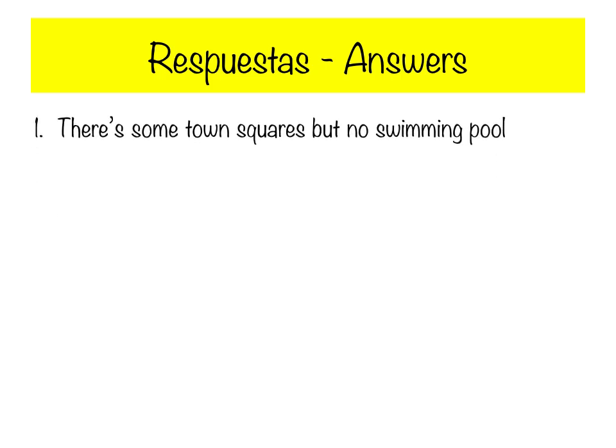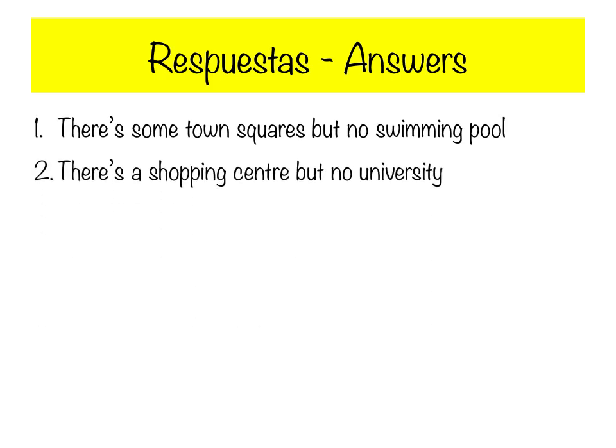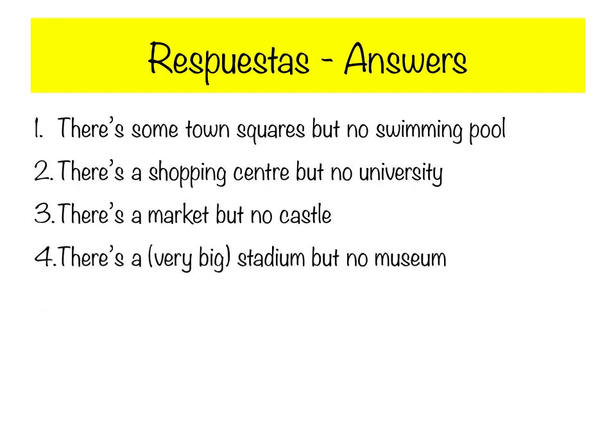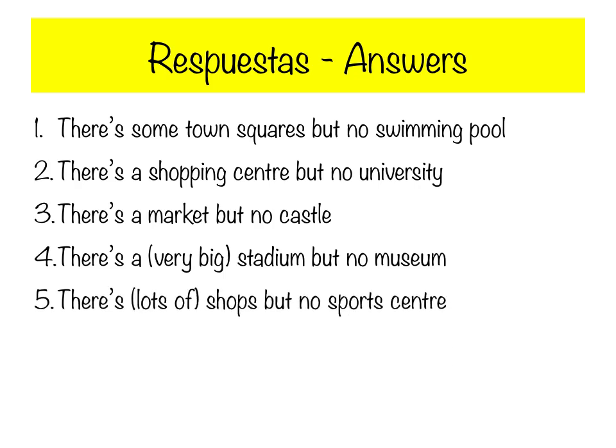Good to have you back! Let's go through the answers — las respuestas. Hopefully the link worked. Número uno: there are some town squares but no swimming pool. Número dos: there's a shopping centre but no university. Número tres: there's a market but no castle. Número cuatro: there's a very big stadium but no museum. Número cinco: there are lots of shops but no sports centre. Hopefully you did well — it's just like the kind of listening activity we do in class.